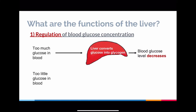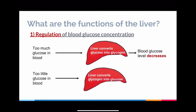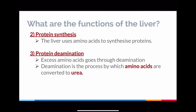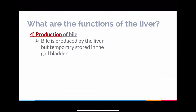If there's too little glucose in the blood, the liver converts glycogen back into glucose and the blood glucose level increases. That's how the liver manages blood glucose concentration in the body. Secondly, the liver also helps to make proteins — it uses amino acids to synthesize proteins. It also helps to break apart amino acids through a process called de-amination. De-amination — not to be confused with denaturation, which applies to enzymes — means breaking apart amino acids to form urea.